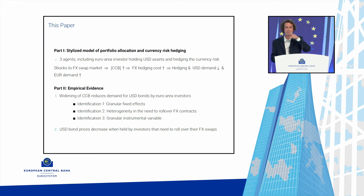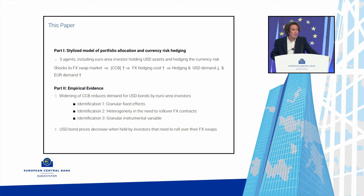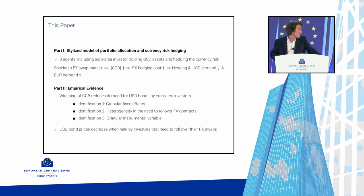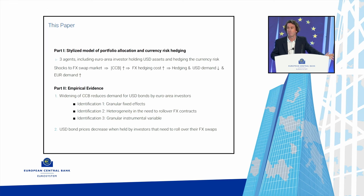Every day there are some unlucky investors who, right before they need to roll over, face a widening of the cross-currency basis. This group is most exposed to the shock compared to investors who need to roll over in one month. By comparing the two demands we can remove most econometric concerns. The third layer of identification is a granular instrumental variable approach. In the second set of results, we find that decreased demand for USD bonds has a pricing impact.